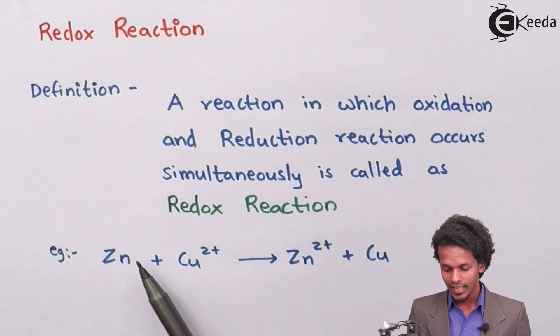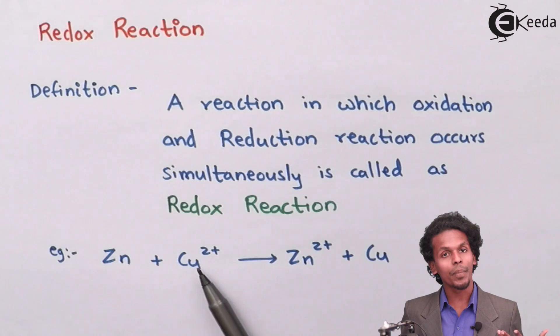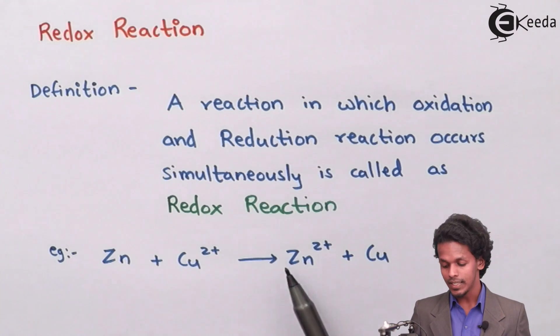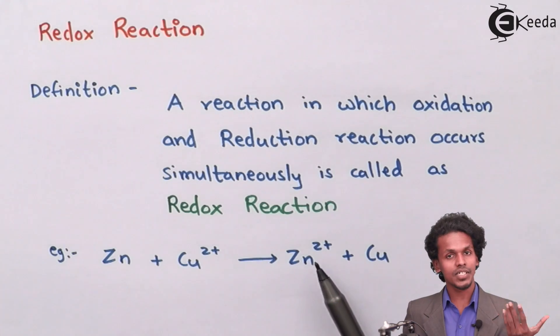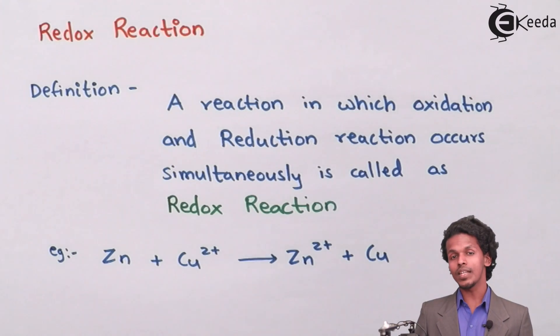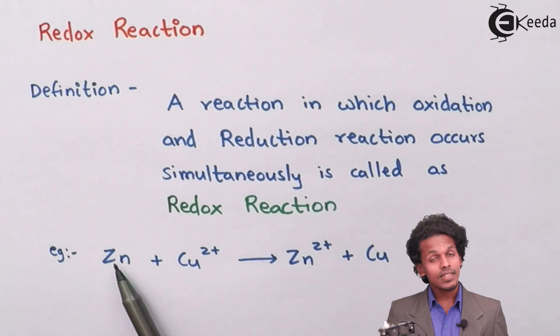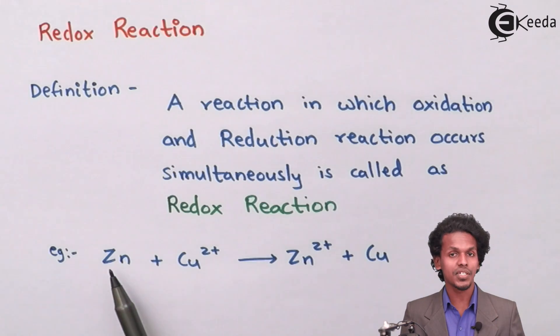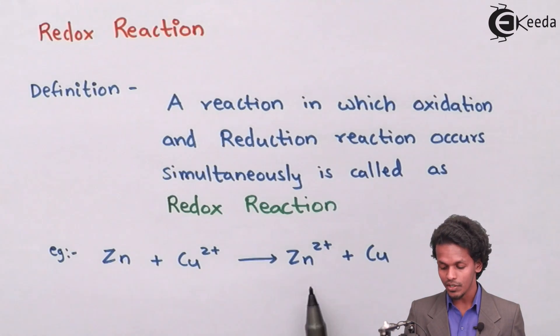I have introduced zinc in an aqueous solution of copper 2 plus which gives us Zn2+ that is present in aqueous solution and copper. As you can see, the zinc which has zero oxidation number is now converted into plus two oxidation number which means it has lost electrons